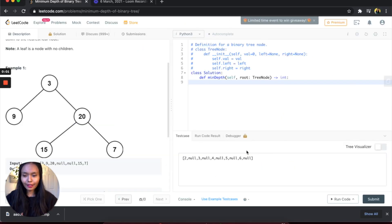Okay, so I'm back in the code and the first thing I want to do is write the base case. I will say if root is equal to none, then return 0.